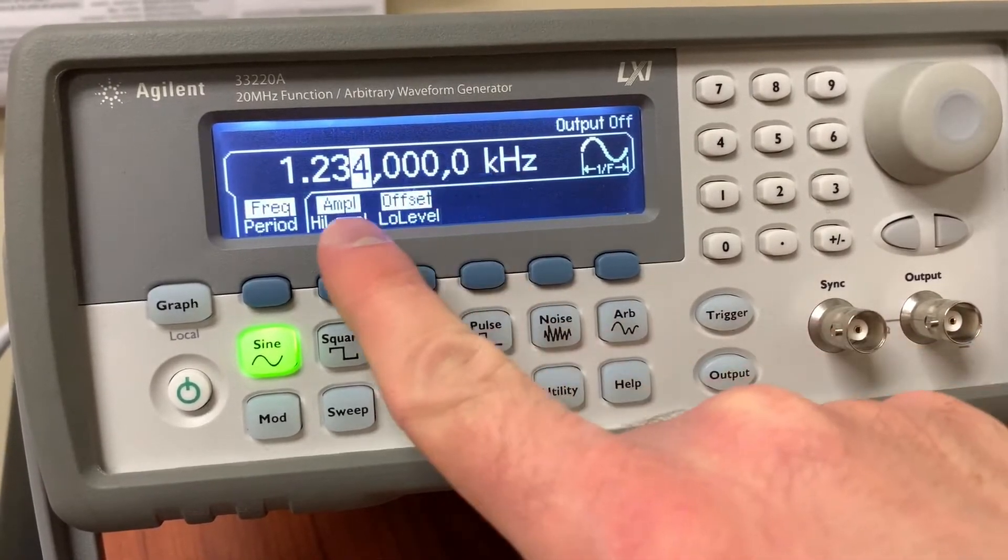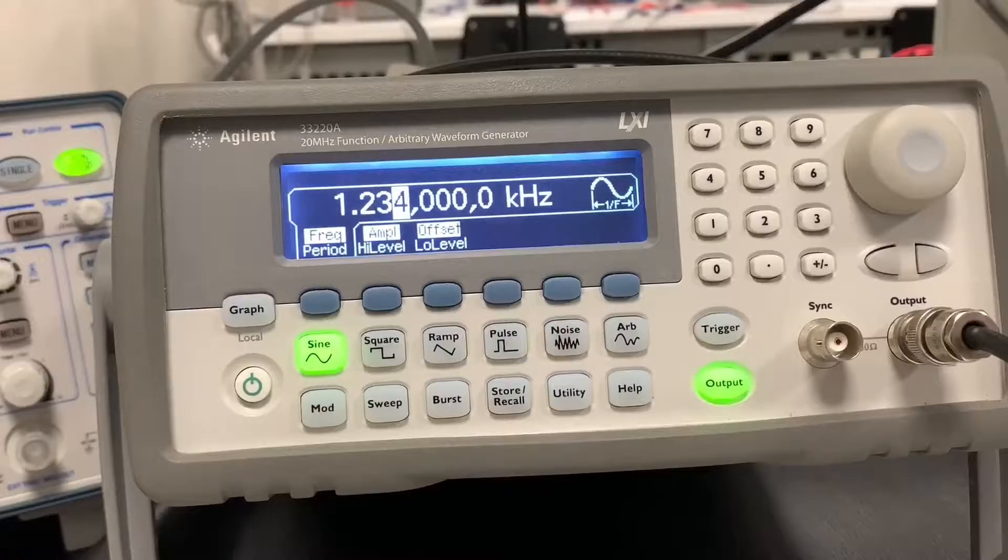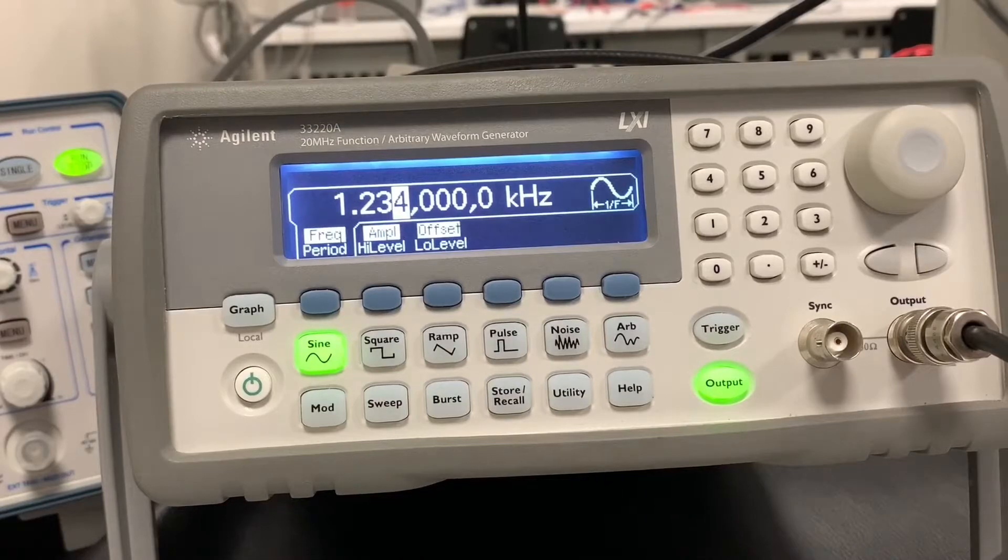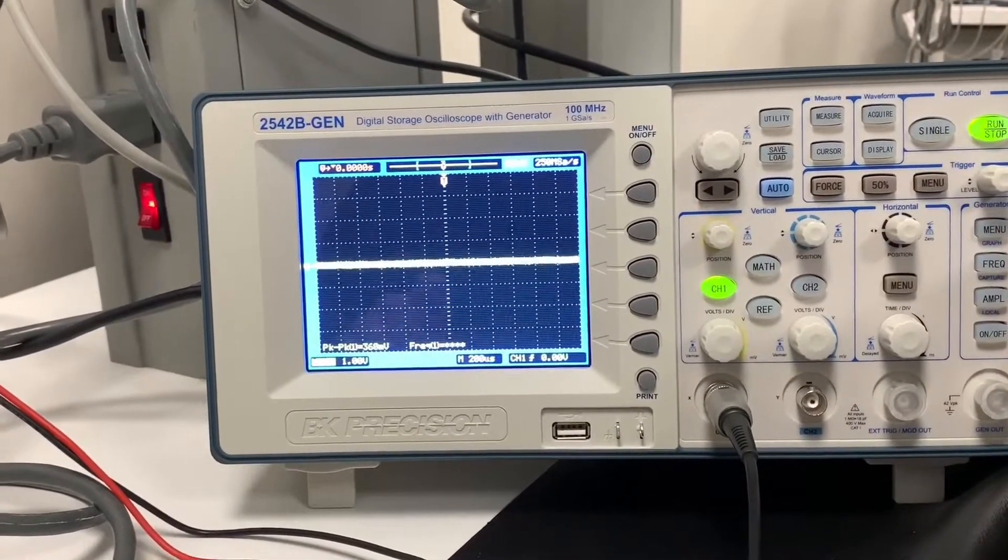which will set it to one, two, three, four hertz, or about one kilohertz. We've got this 1.234 kilohertz signal coming out of this. We can look at our scope and see that there's still not much of a signal showing up. And that's because the